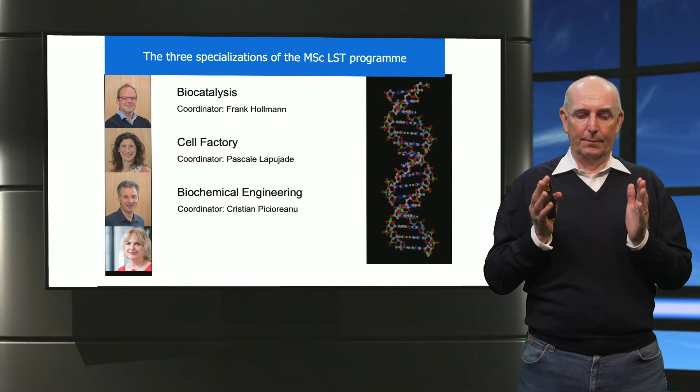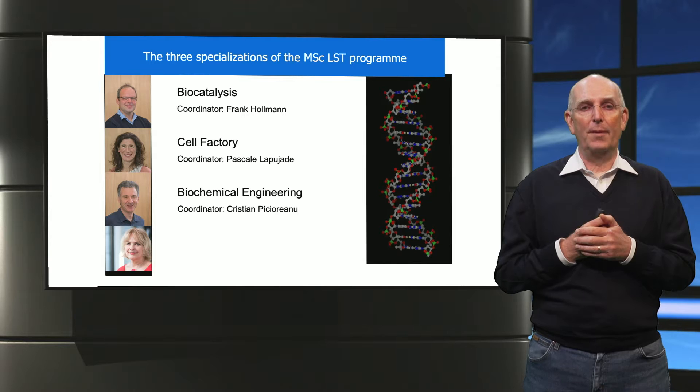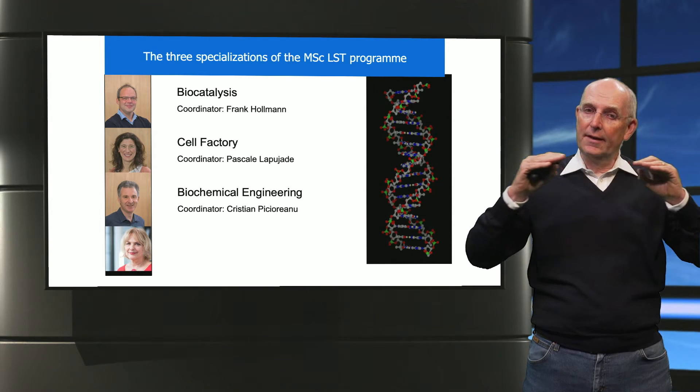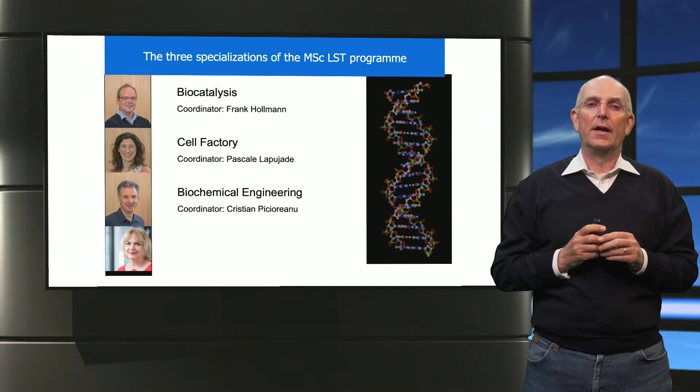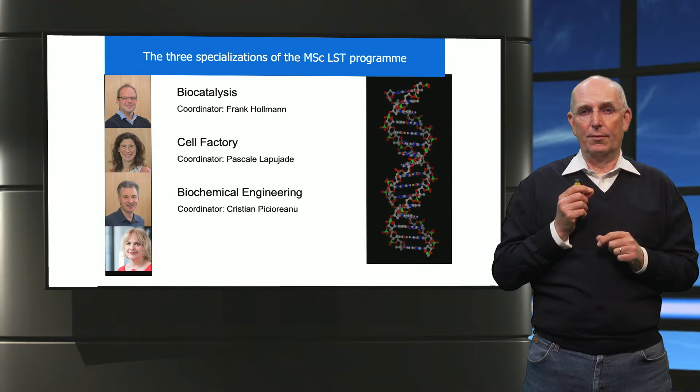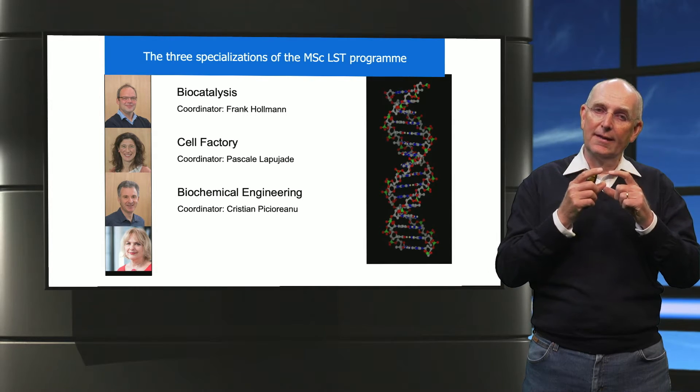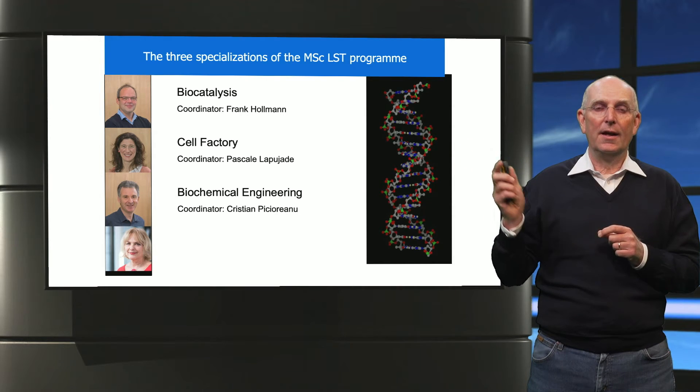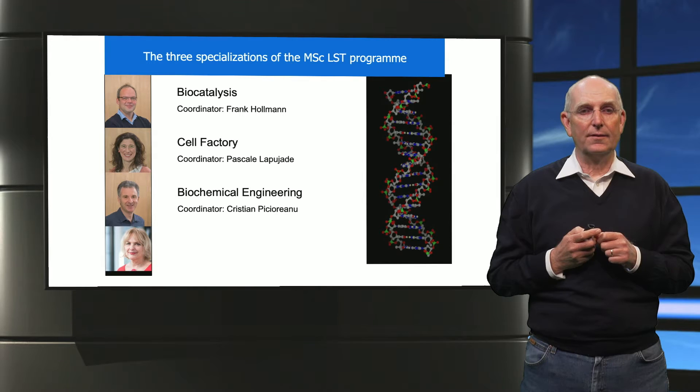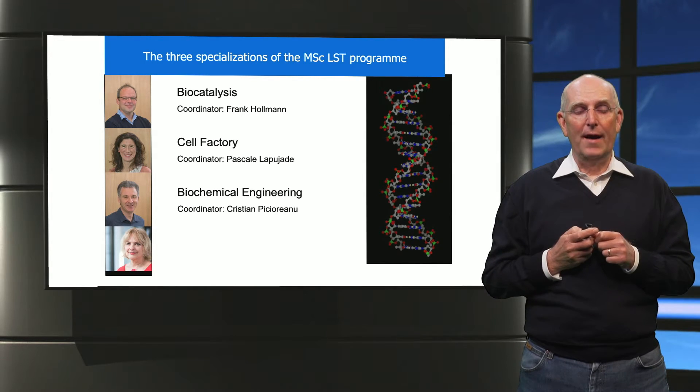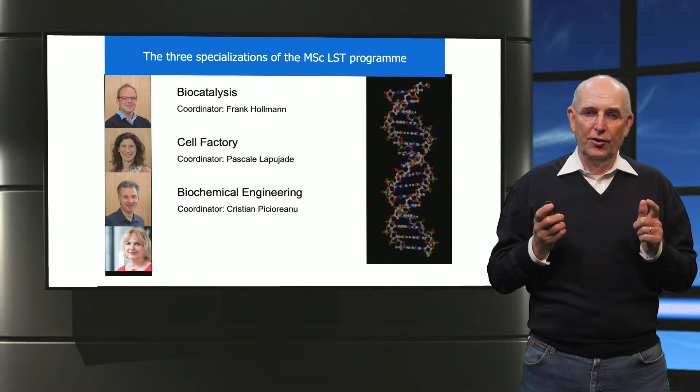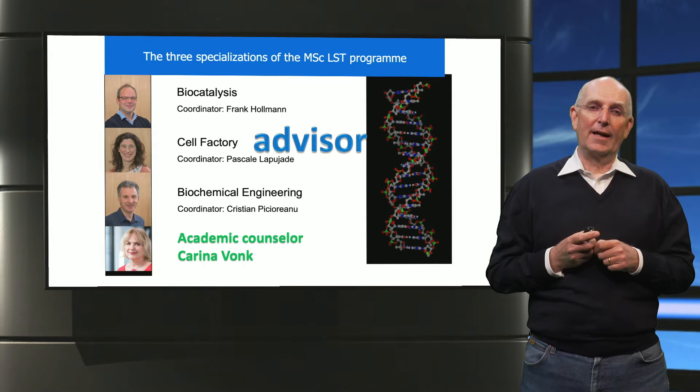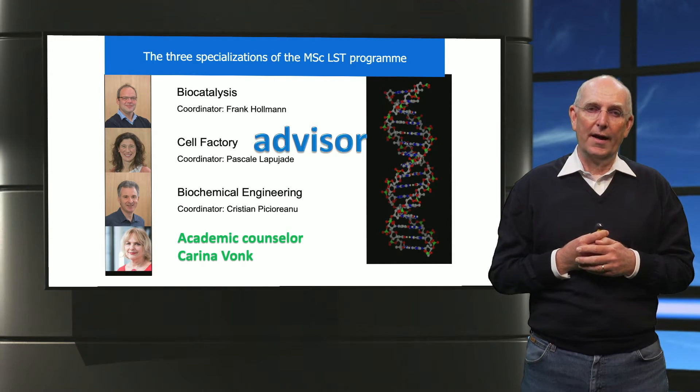Now in addition to the core program we have specializations, and the specializations are essentially linked to the different sizes—the large scale, the scale that Anthony van Leeuwenhoek was busy at, and the smaller scale. We look at biocatalysis for organic chemistry with enzymes, we look at cells as factories, and we look at the pure engineering aspects. All of this is helped with three academic advisors: Frank Hollmann for biocatalysis, Pascal Lapujad for the cell factory, and Christian Piccioreanu for the engineering aspects. They are your advisors on academic aspects. In addition, there is an academic counselor, Carina Funk, who will help you with all other aspects of your study.